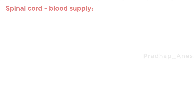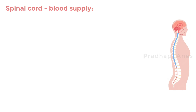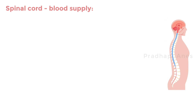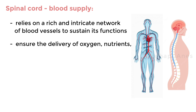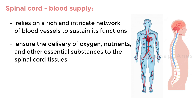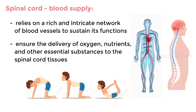Spinal cord blood supply. The spinal cord, a crucial part of our central nervous system, relies on a rich and intricate network of blood vessels to sustain its functions. These blood vessels ensure the delivery of oxygen, nutrients, and other essential substances to the spinal cord tissues, enabling it to carry out its vital tasks.